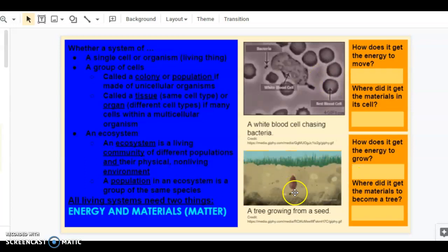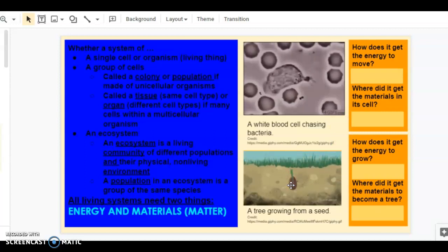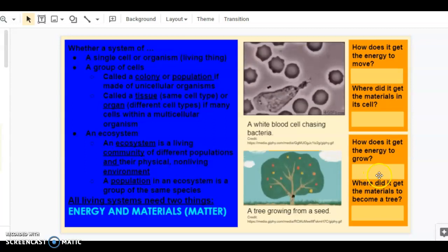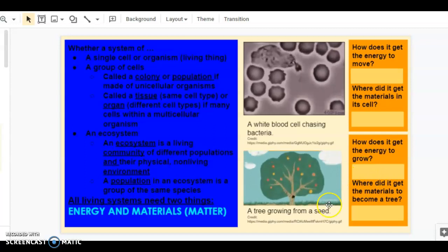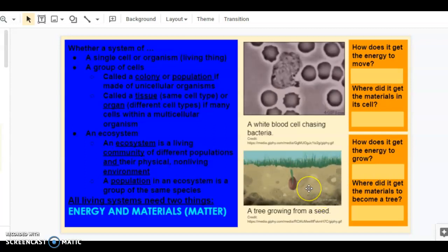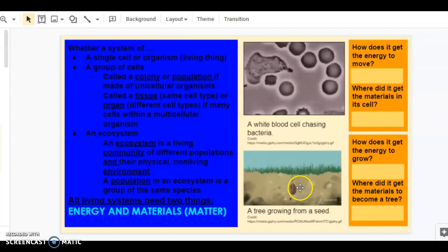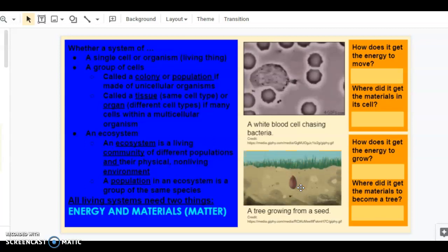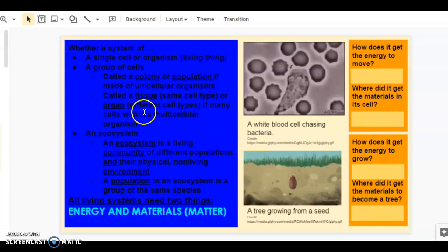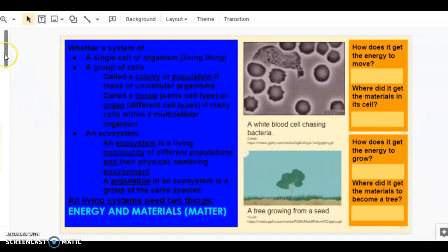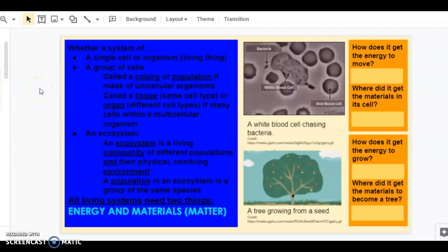Here we have another example. A single seed develops into a big tree. Again, no wrong answers here. Just hypothesize. How did it get the energy to grow? Remember, the seed's underground. It doesn't have access to the sun yet. And where did it get the materials to go from something so small to something so big? Add your hypotheses here in the four answer places. No wrong answers, so don't panic. Just think about it. Pause the video if you need to, and then come on back.